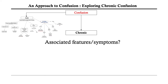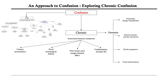Similarly, in chronic confusion, it will be useful to explore associated features and symptoms. Ask yourself: could this be dementia, and if so, what type? Is there a long history of alcohol excess and poor nutrition? Are there mood changes, poor mood, or loss of interest in general? Are there any focal neurological signs? And is the patient incontinent of urine or do they have gait disturbance?